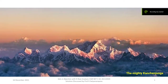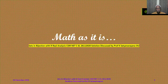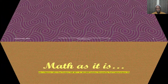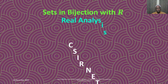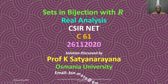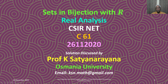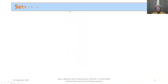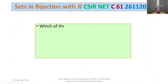We now discuss the solution of a problem from the section Real Analysis. The problem is on sets in bijection with R. This problem appeared in CSIR National Eligibility Test held on 26th November 2020. The question is from section C and it carries 4.75 marks.